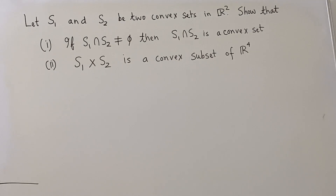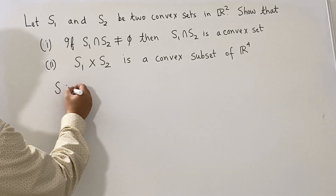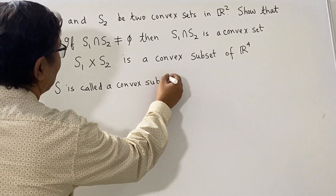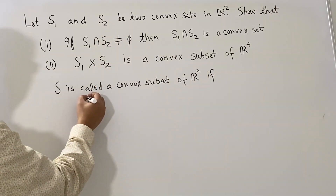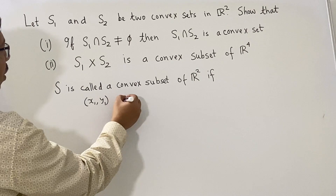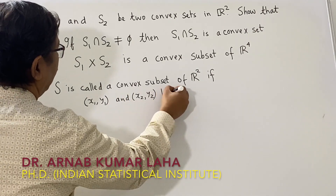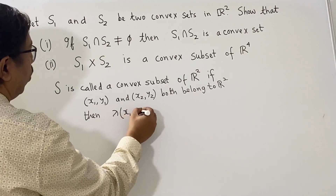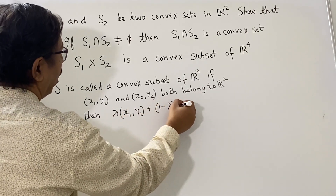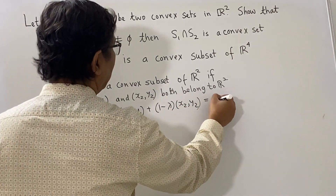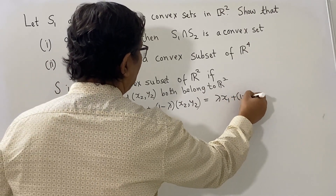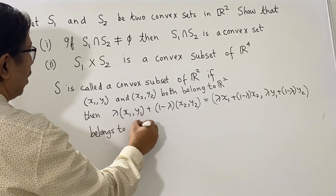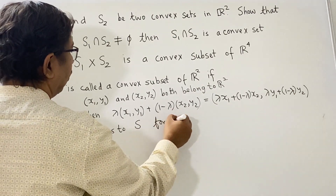But before that, we first define what is a convex set. S is called a convex set, or rather a convex subset of R², if you have two points (x1, y1) and (x2, y2) and both of them belong to R², then lambda·(x1, y1) + (1 − lambda)·(x2, y2), which simplifies to (lambda·x1 + (1−lambda)·x2, lambda·y1 + (1−lambda)·y2), belongs to S for all lambda between 0 and 1.